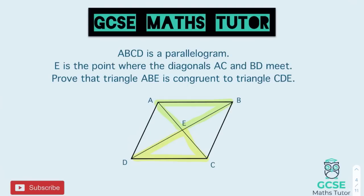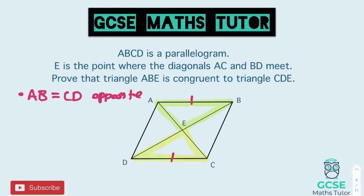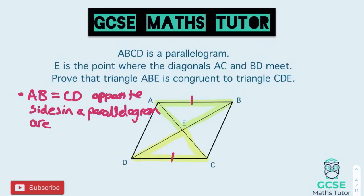If this is a parallelogram, what does that tell us straight away? We know that opposite sides in a parallelogram are equal. So the side AB equals the side CD. We would say: AB is equal to CD because opposite sides in a parallelogram are equal. That has proved a side.